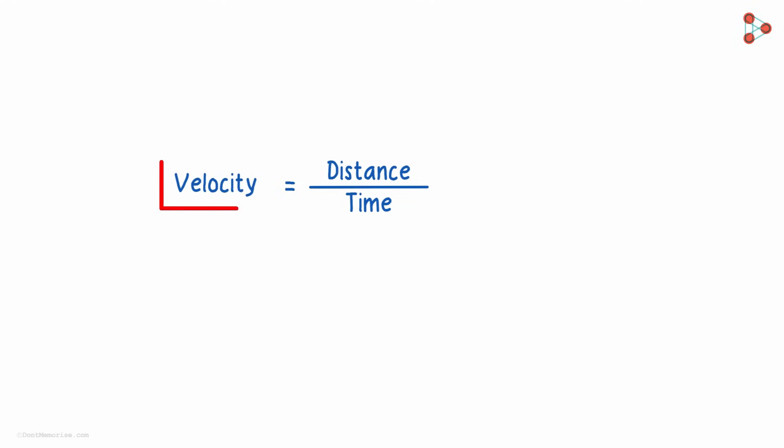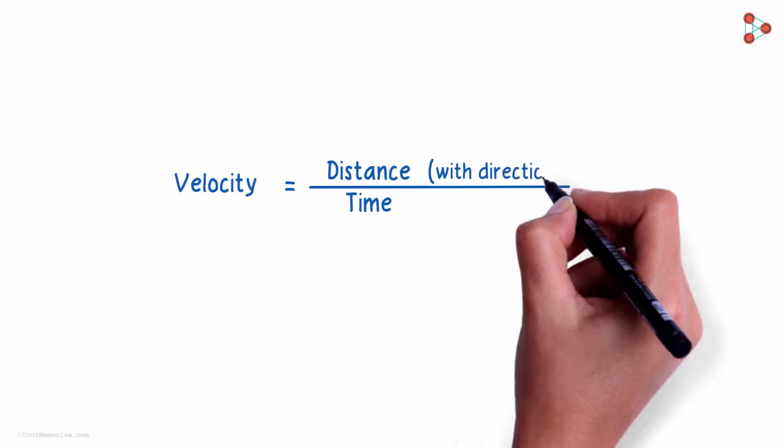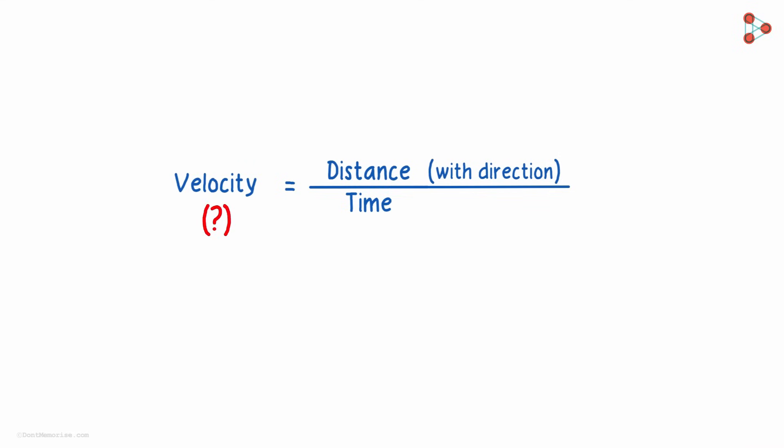We are aware that velocity is a vector quantity and is direction aware. It's speed with direction. What about the standard unit of velocity?